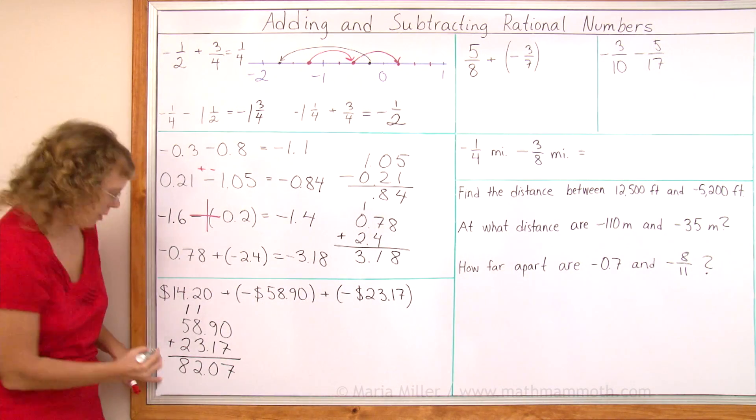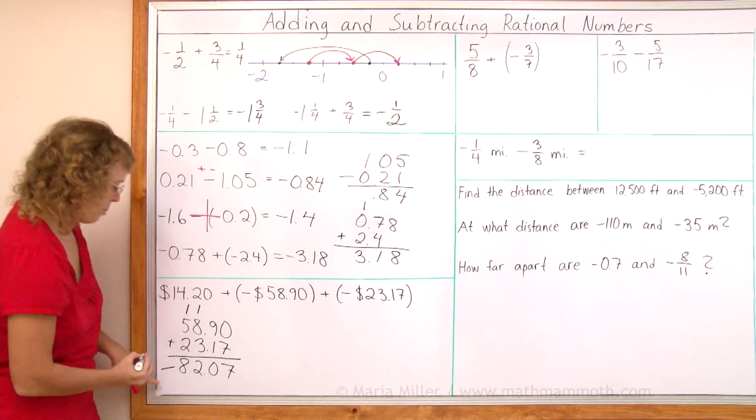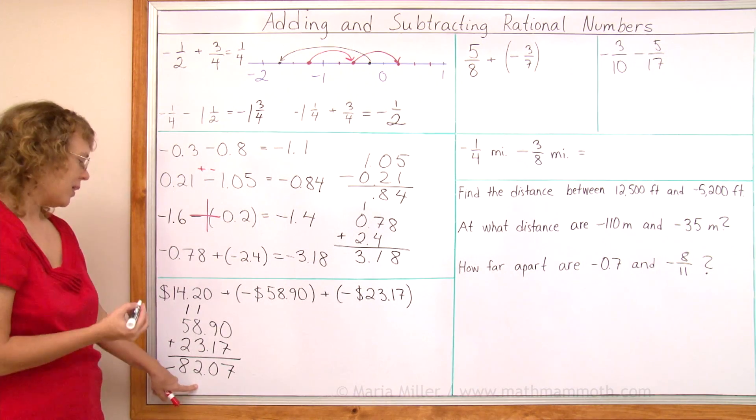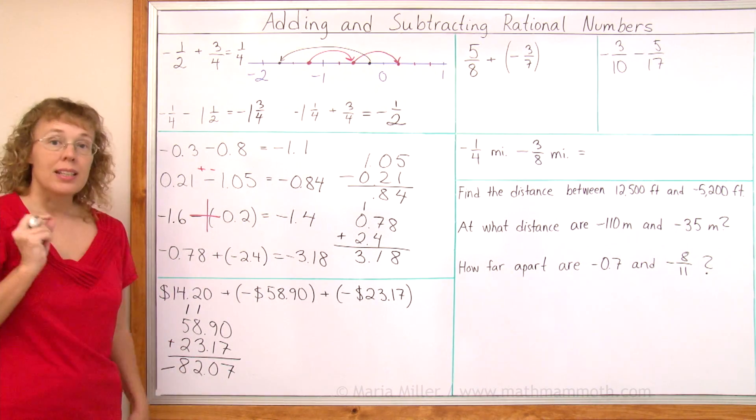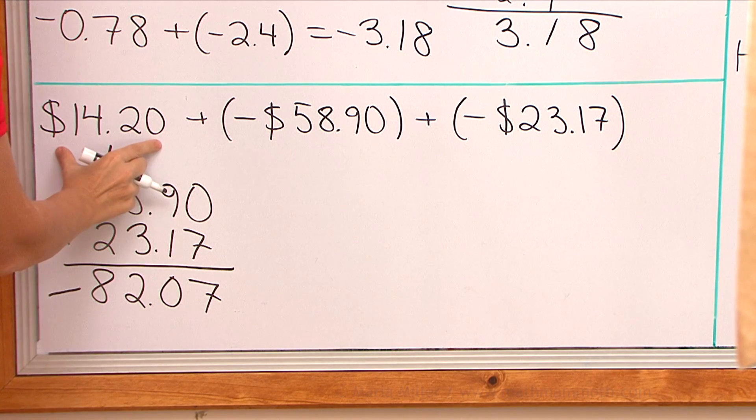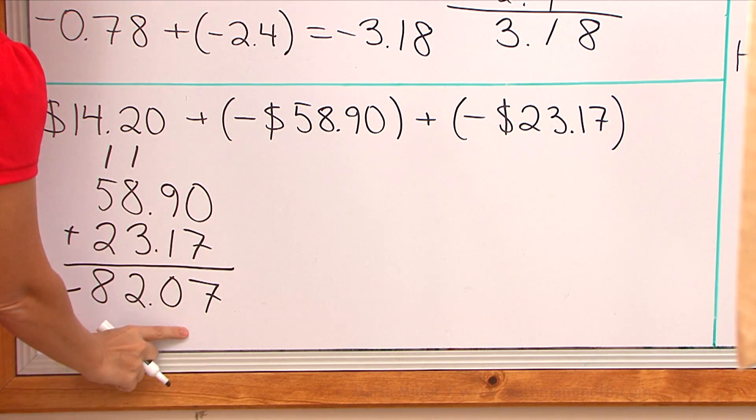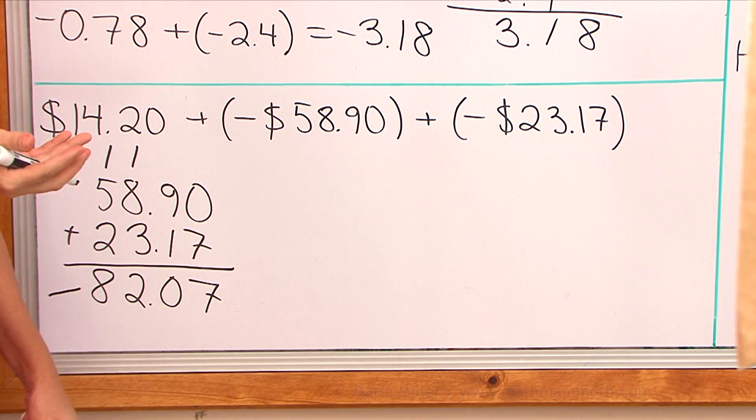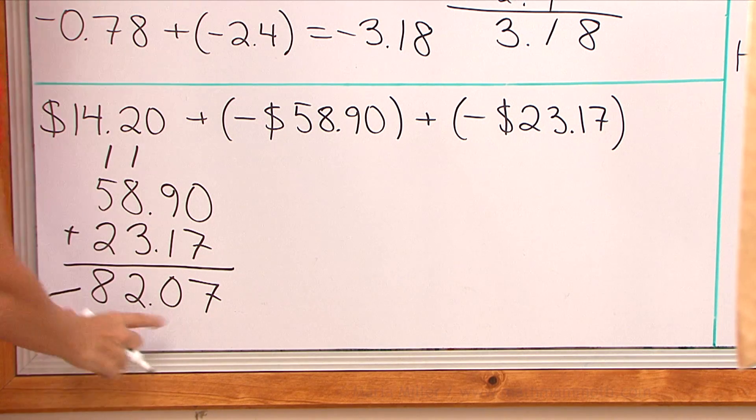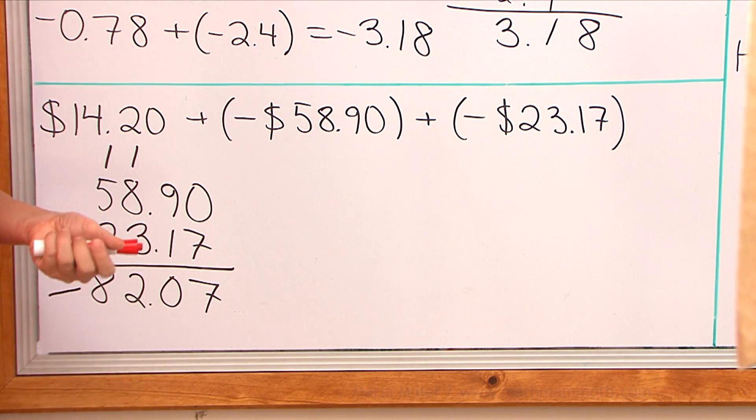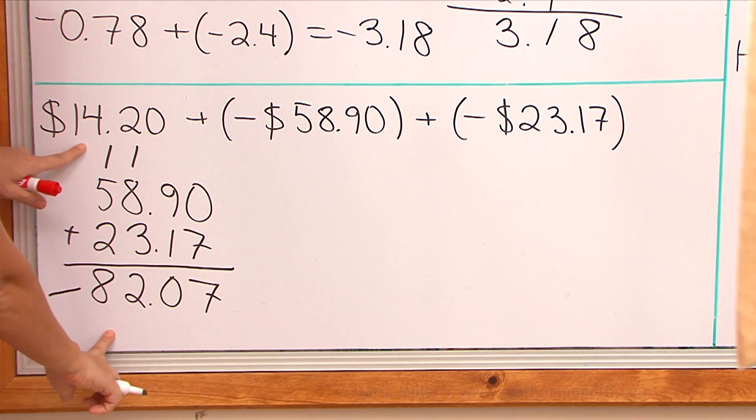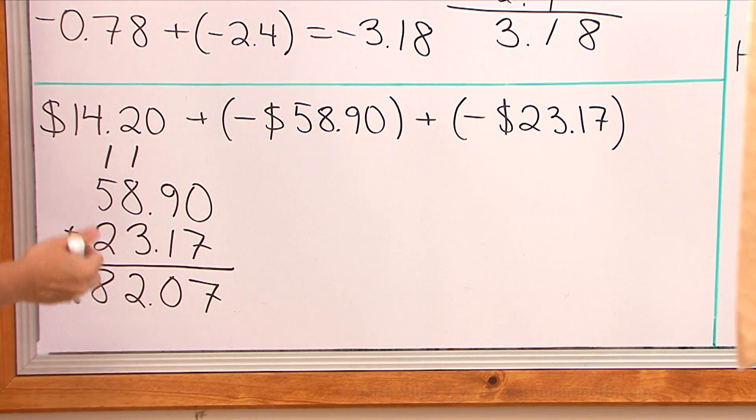So these are all negatives. I'm going to put negatives here because it's negative $82.07. And then here's my positive and here's my negative and I'm adding them. I can see that the negatives will win. But by how much? For that I will now subtract the absolute values of these or the plain numbers.